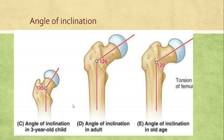The angle of inclination changes with age: in early age it is greater and more obtuse, and with increasing age the angle decreases and becomes more acute. In adults the average is 126 degrees, in children it is approximately 135 degrees, while in old age it comes towards 120 degrees.